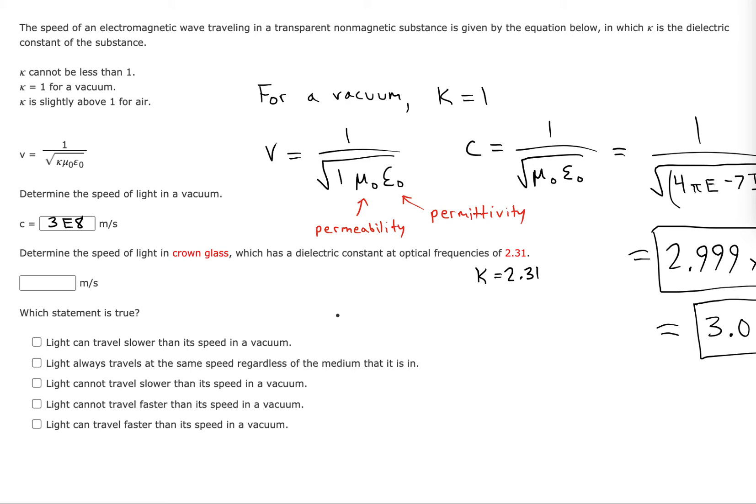So we'll just do the same equation, but in this case, we'll throw in a 2.31 here. And then we'll do times 4 pi, e minus 7, 8.85, e minus 12. And let's see what that gives us.